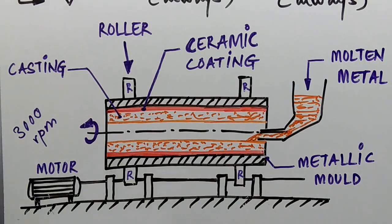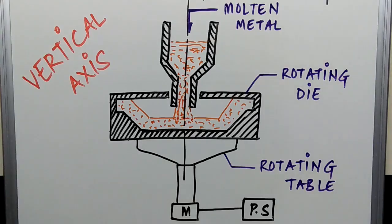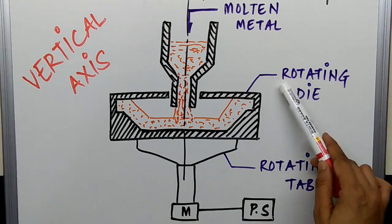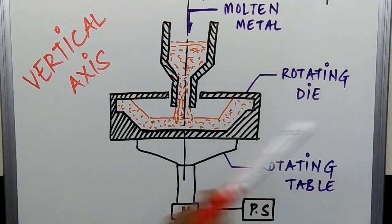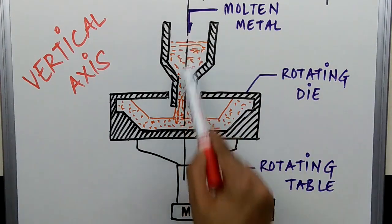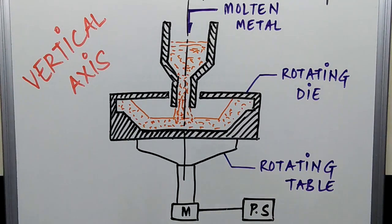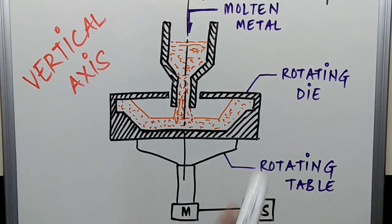The mold is kept rotating until the molten metal solidifies, after which the casting is extracted. Now for true centrifugal casting with a vertical axis: we have a rotating die, a rotating table, an electric motor connected to the rotating table, and a power supply. The molten metal enters through the pouring basin, is subjected to centrifugal force, particles deposit towards the wall, and the casting is extracted after solidification.